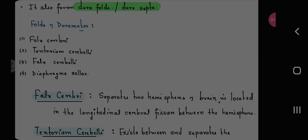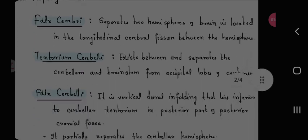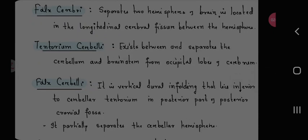Forms of dura matter: falx cerebri, tentorium cerebelli, falx cerebelli, and diaphragma sellae. Falx cerebri separates two hemispheres of brain, is located in the longitudinal cerebral fissure between the hemispheres. Tentorium cerebelli exists between and separates the cerebellum and brain stem from occipital lobe of the cerebrum.